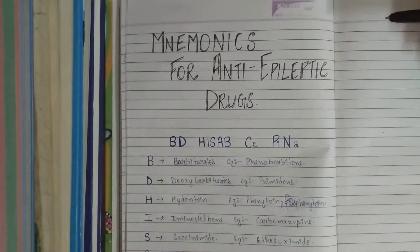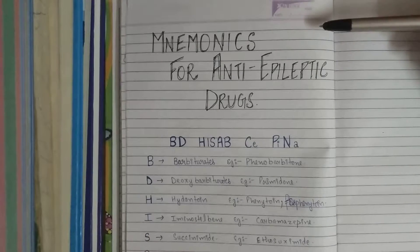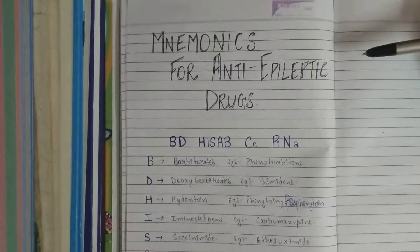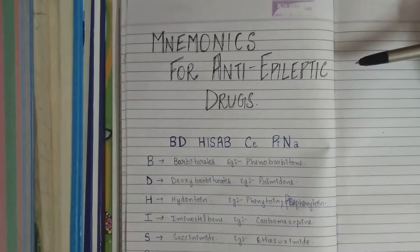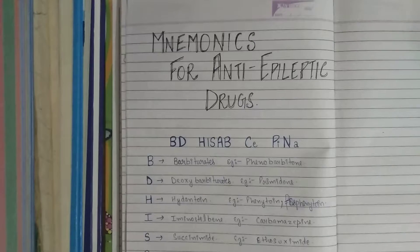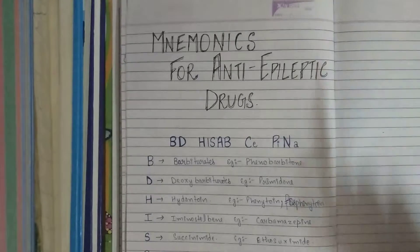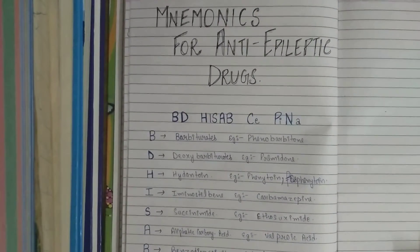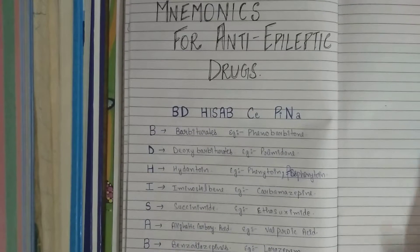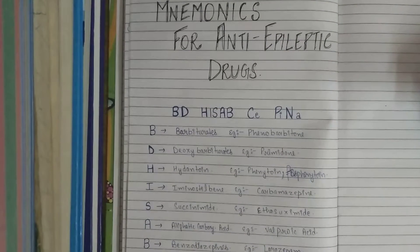Hello everyone. Today we will talk about mnemonics for anti-epileptic drugs. Anti-epileptics, as we all know, are the drugs that are used to treat epilepsies. This classification consists of 10 types of drugs, so it becomes difficult to retain or remember all of them. Today we will discuss a convenient mnemonic that will make it easier to recollect during exam time or even in general.